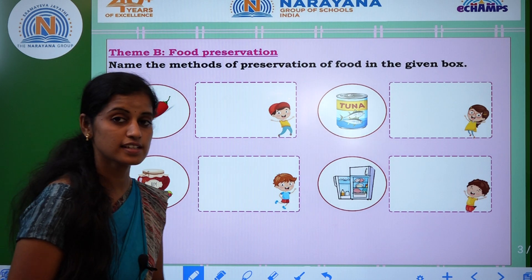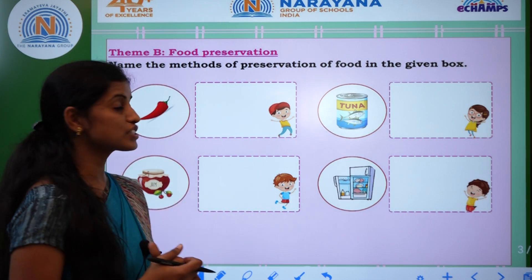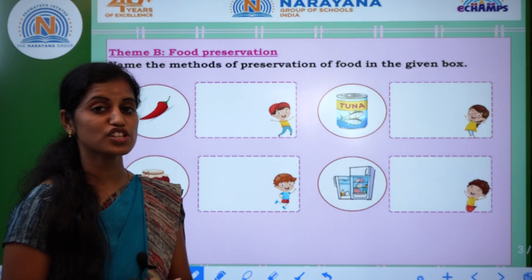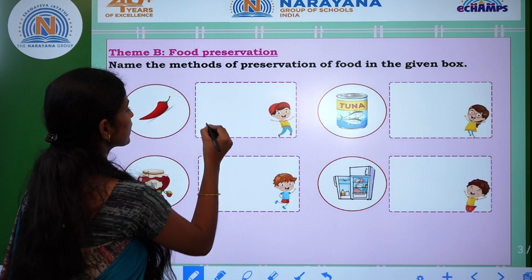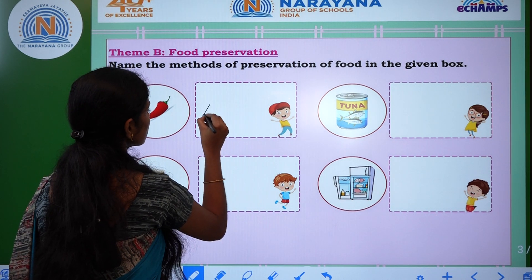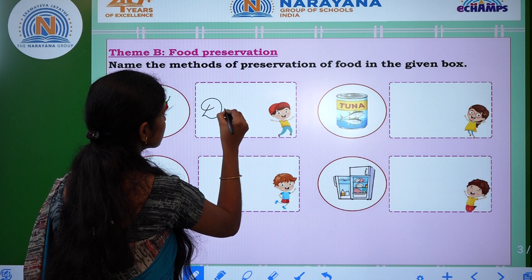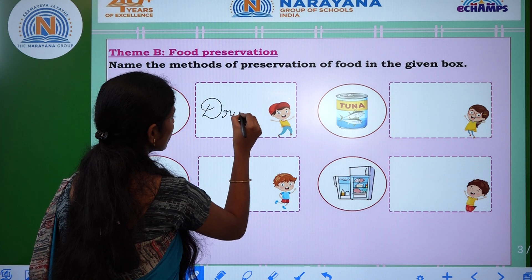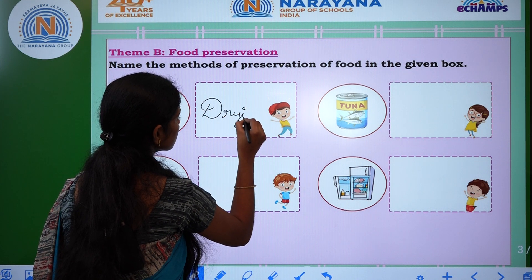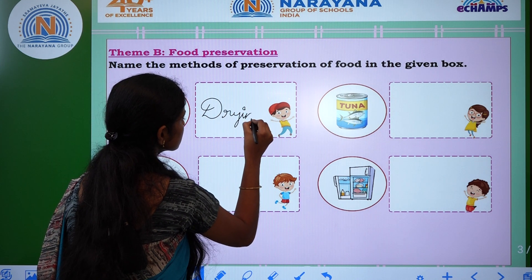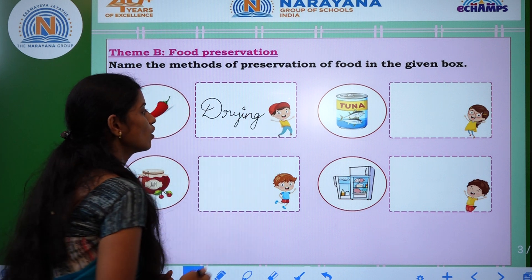Chilies — the method of chili preservation is called drying. D-R-Y-I-N-G. Drying.